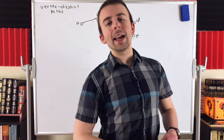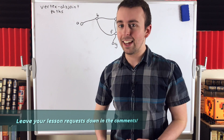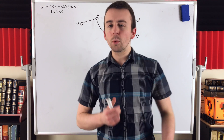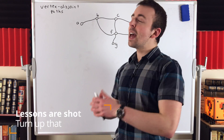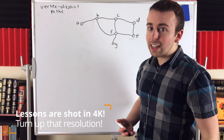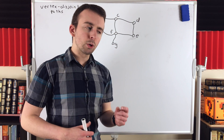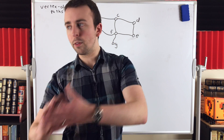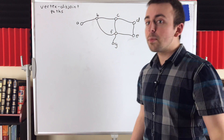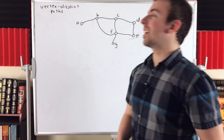Hey everyone, in today's Wrath of Math lesson, we're going to talk about vertex disjoint paths in graph theory. Their name really gives away what they are, but in this lesson, we're going to talk about some examples of them and some different types of vertex disjoint paths. My intention in presenting this lesson is to start preparing us for a proof of Menger's theorem, which we'll go over in a future lesson. Let's get into it.